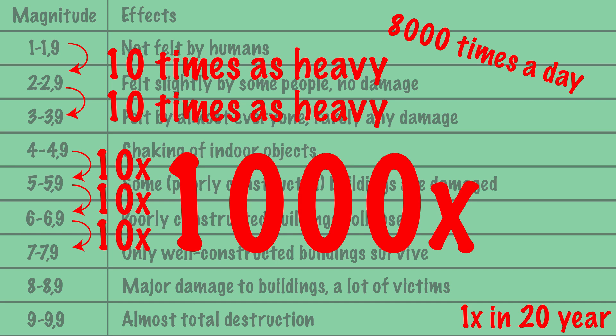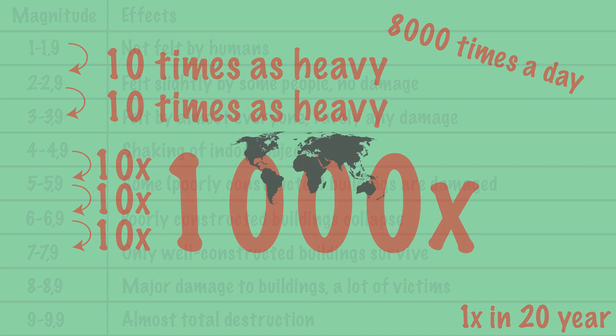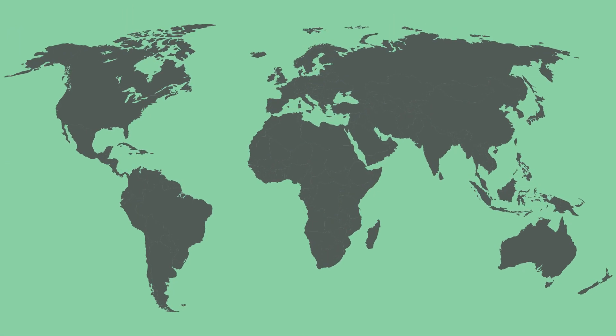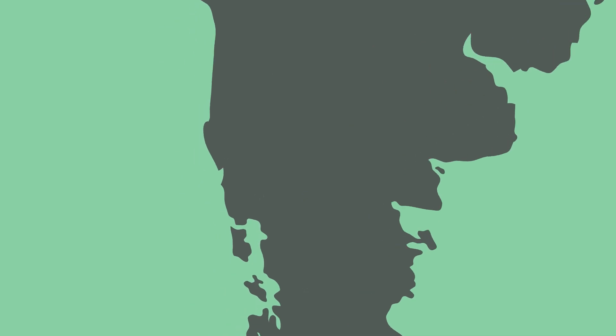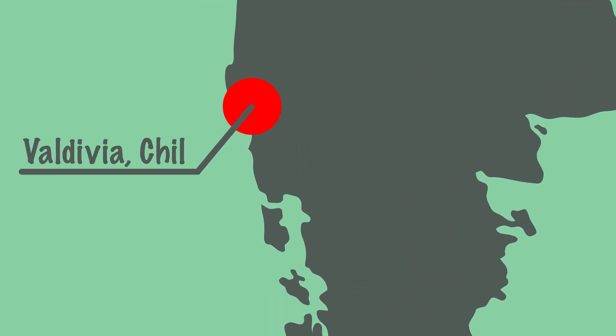The strongest earthquake ever recorded was the Valdivia earthquake in Chile in 1960. It had a magnitude of 9.6 on the Richter scale. The Richter scale extends up to and including scale 12, but such strong earthquakes have not yet been measured.